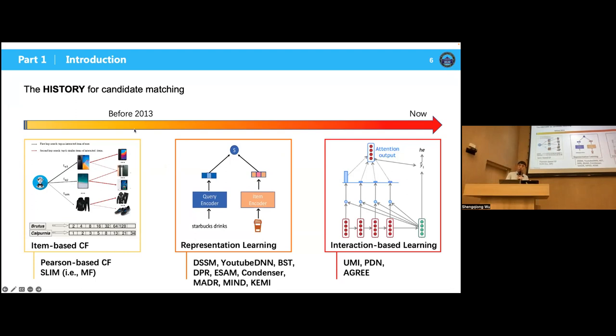So in many commercial systems, actually we have many user contexts and scene information. So these features are really wonderful for the ranking. In the past few years, many efforts are made for the matching stage. Here we sort out the milestones along the timeline. So before 2013, people use item-based CF to achieve the purpose.